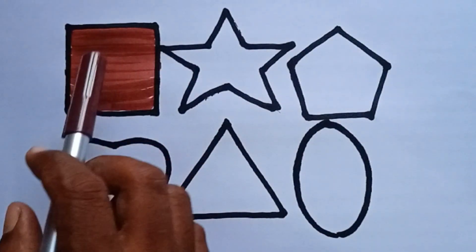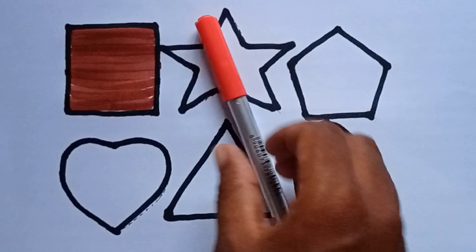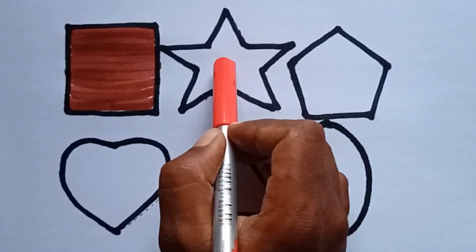Finish. This is square. And next one, red color. I am coloring star.